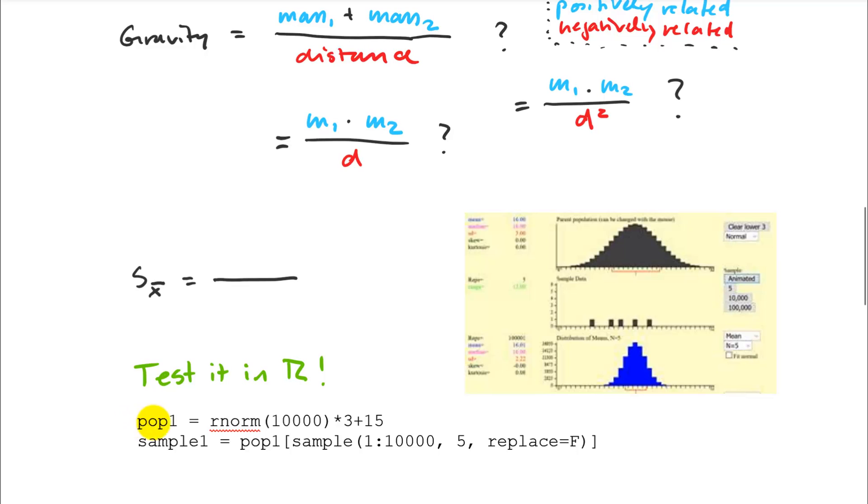So you can collect some data with the CLT tool that I showed you in the last video. And you can or you can just program it in R and see if it works out. So you can create a normal distribution where you know what the mean and standard deviation is, you sample it, and see if your formula that you dream up based on this principle, what you think is positively related, and what do you think is negatively related, see if it works.